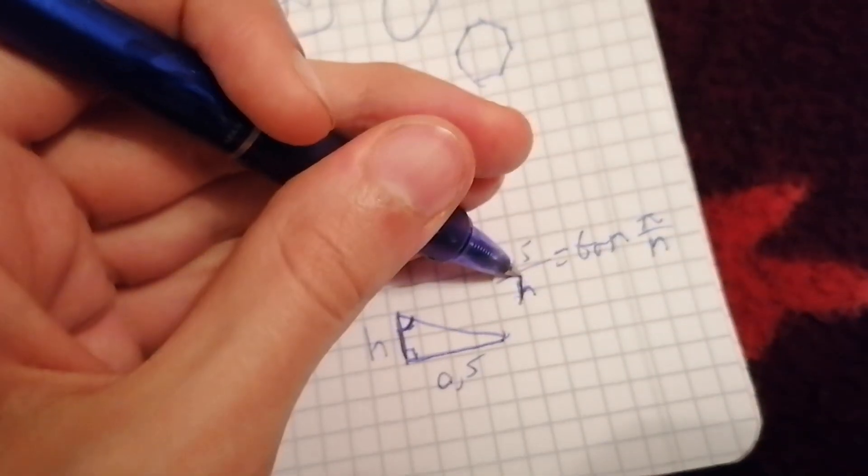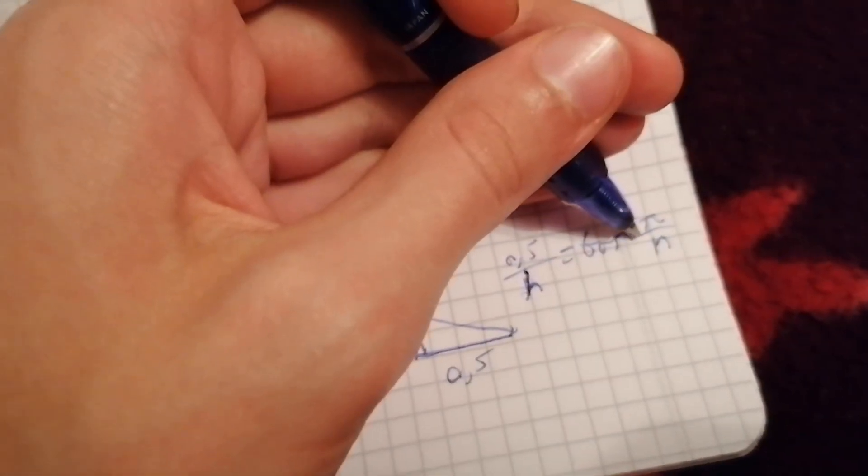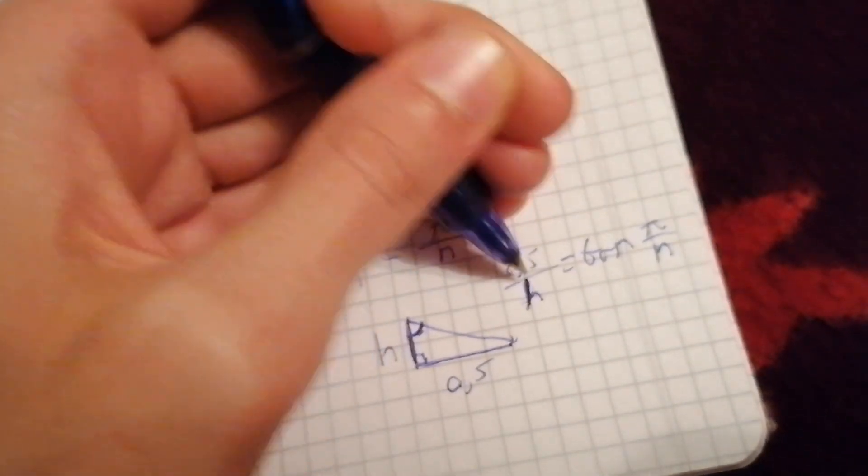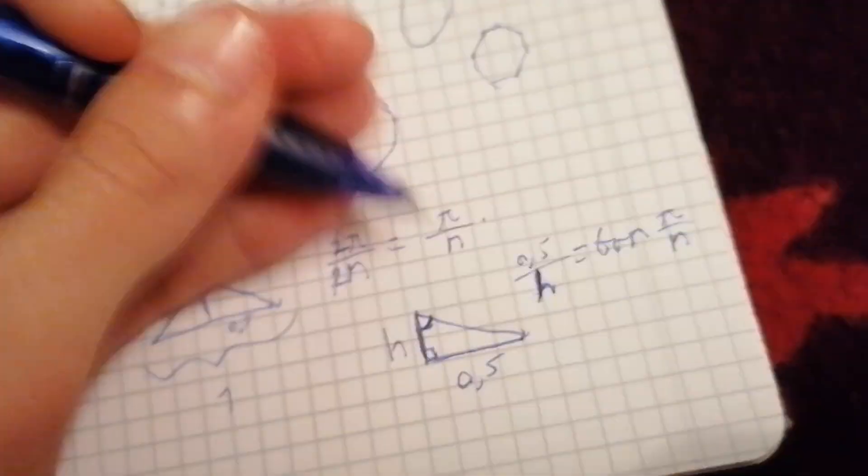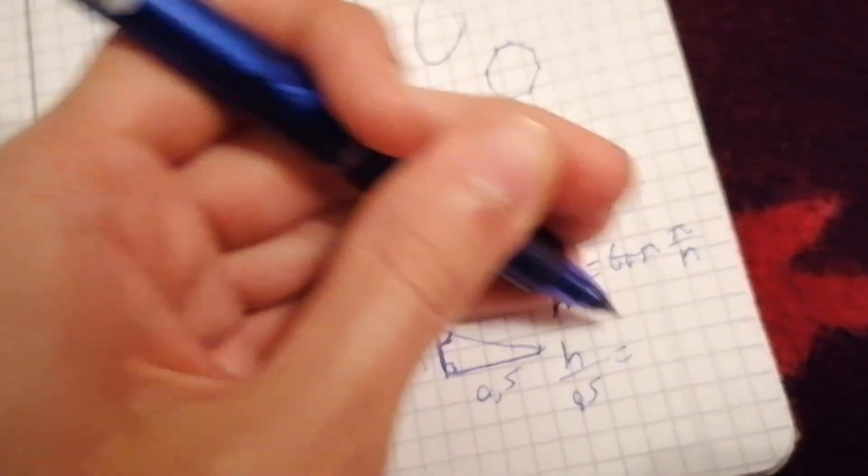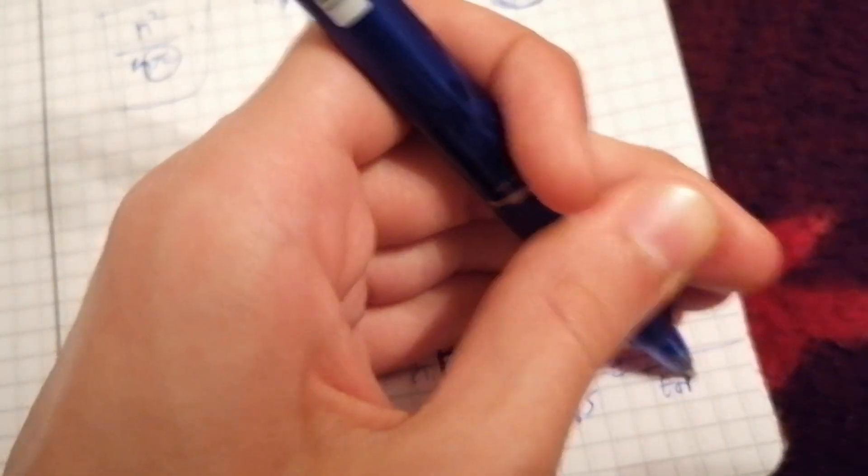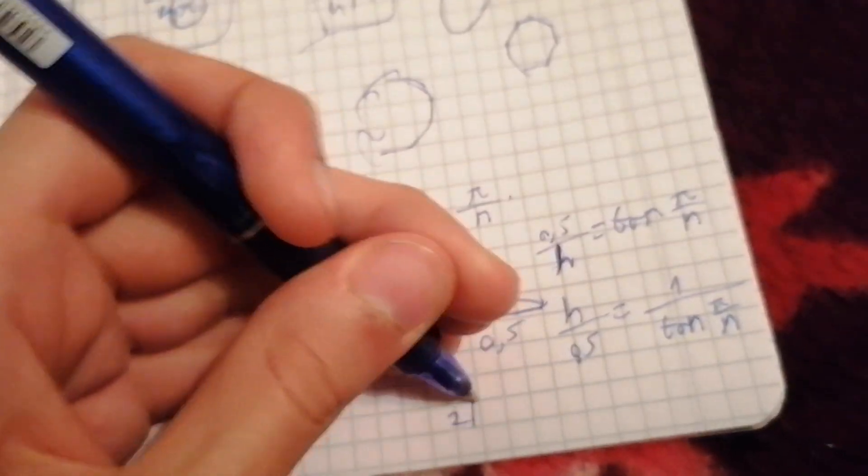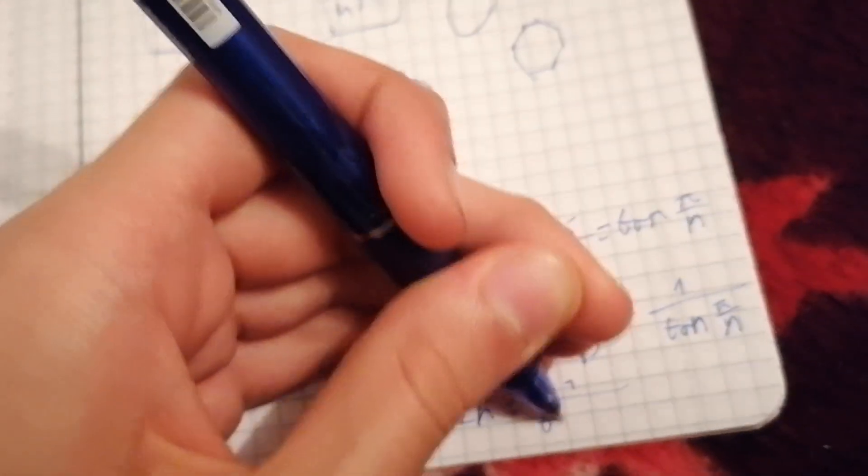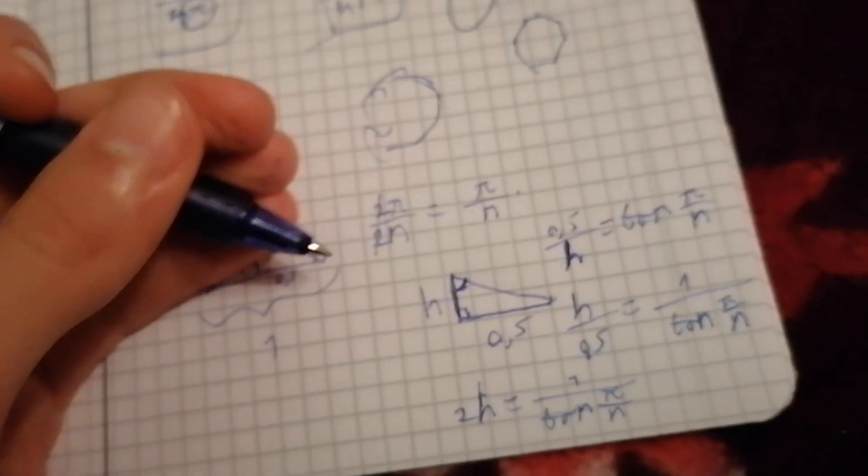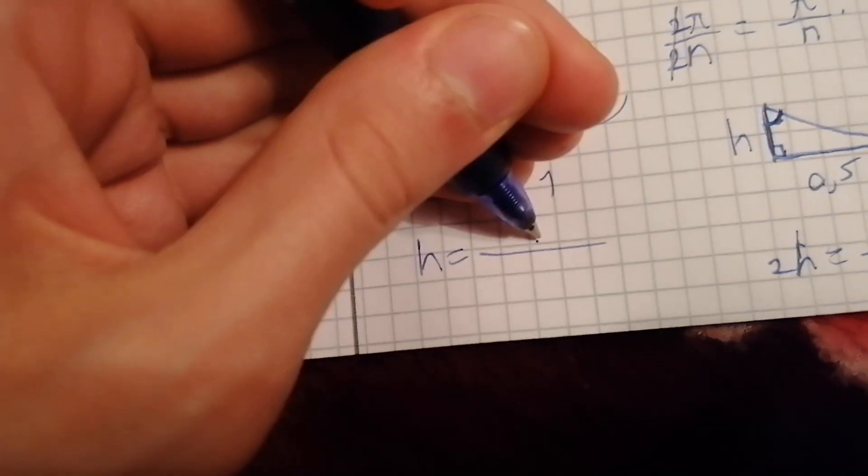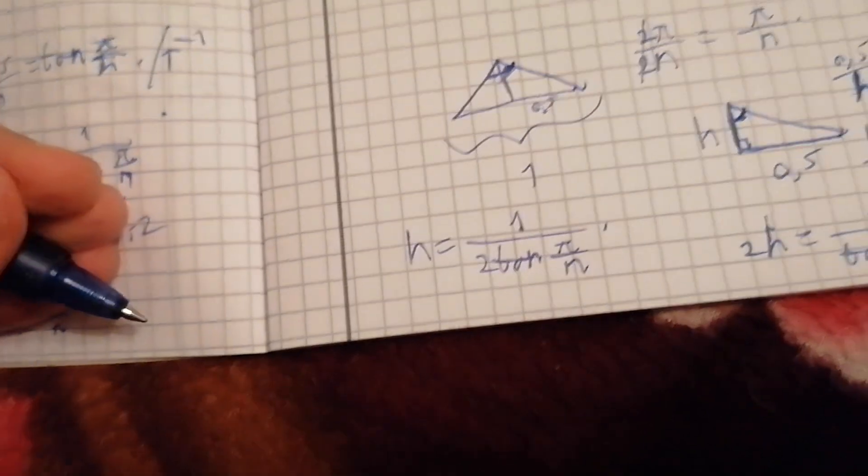Okay. So, we can find h. h times this is equal to 0.5. So, let's just, this will mean that h over 0.5 is equal to 1 over tangent of pi over n. And h over 0.5 is just 2h is equal to that 1 over that tangent. And we can divide by 2 to arrive at the result that our h is 1 over 2 times tangent of pi over n. So, we found our height.